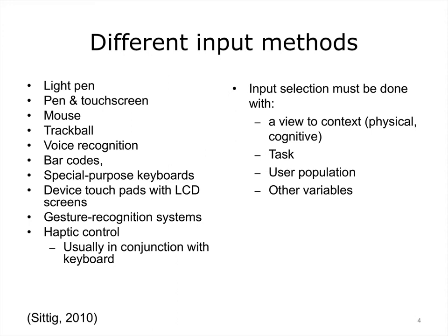Some methods are light pen, pen, and touch screen as we see with palm-top devices, mouse, track ball, voice recognition, and barcodes, which can be used in situations where transactions related to physical objects must be tracked, such as use in medical administration systems. There are special purpose keyboards and device touchpads. Gestural interfaces are becoming increasingly common in gaming and certain very specific environments such as public restrooms. Haptic touch-sense controls, in which the user may wear a device that provides tactile feedback or approximated tactile feedback such as making a click sound on key press, are new developments. Most of these interfaces still involve a microprocessor in some way and often are still used in conjunction with the keyboard.